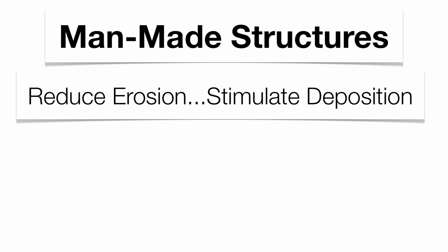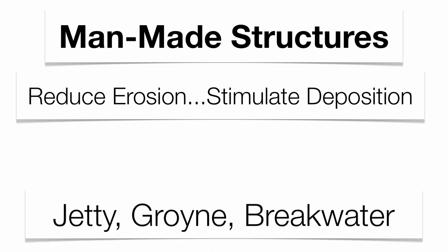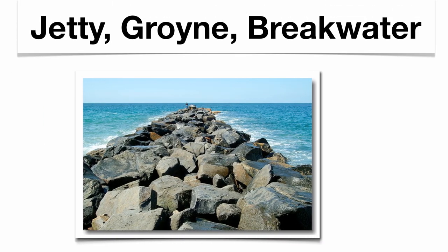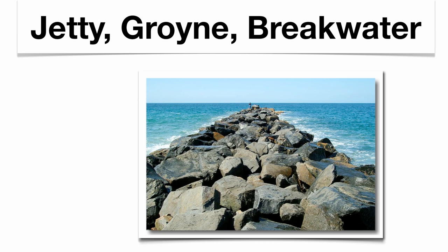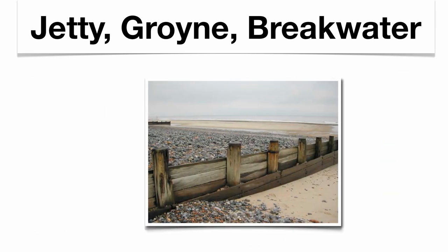There are some man-made structures that are going to be put out in the water to disrupt this longshore current. These structures are going to reduce the amount of erosion going on, but also stimulate deposition. They include jetties, groins, and breakwaters. Jetties can either be rock walls or wooden walls going out into the water to disrupt the longshore current — both are going to stimulate deposition.